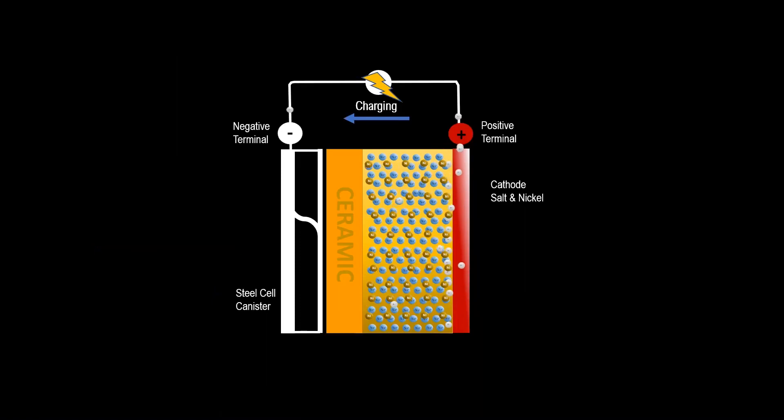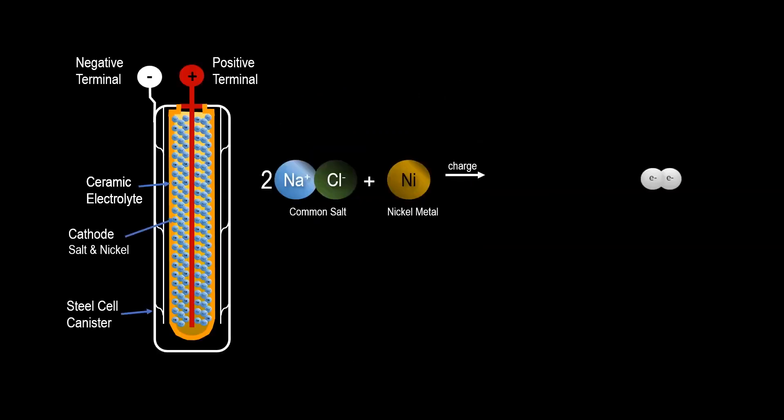As the battery charges, electrons flow from the positive to the negative terminals. Sodium ions from the salt flow through the ceramic tube to the negative terminal, leaving the chloride behind. Chloride ions attach to the nickel, making nickel chloride.